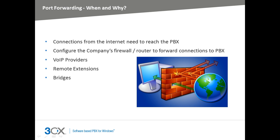Whenever you need to connect to the PBX from the internet, you must configure your firewall to allow such connections and to forward the connections to the PBX. This is known as port forwarding and the configuration steps depend on the model of the firewall device. This means that you must configure port forwarding when you are using either a VoIP provider connection, bridge connections, or remote extensions.